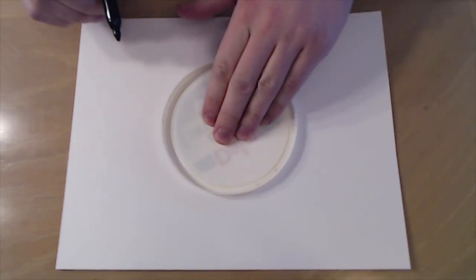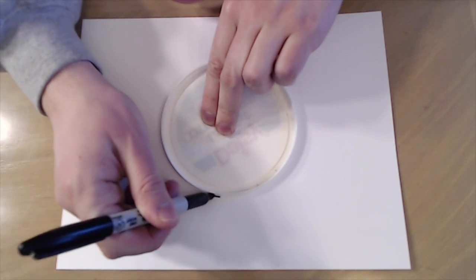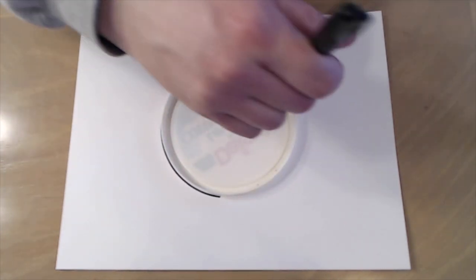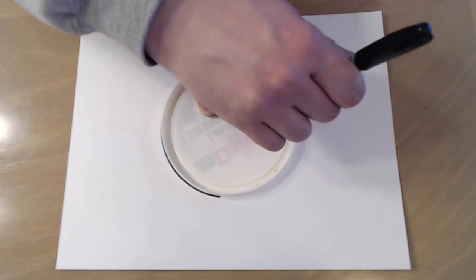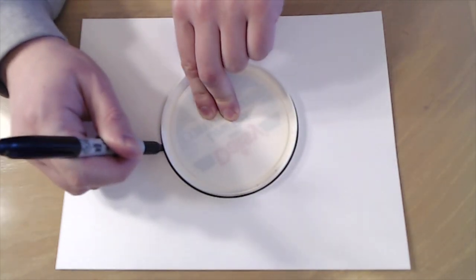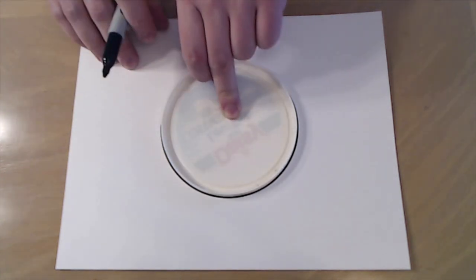So first thing is you just want to draw your circle. So I'm just going to trace this plastic lid right here. Try to keep your marker straight up and down so you get a nice circle.